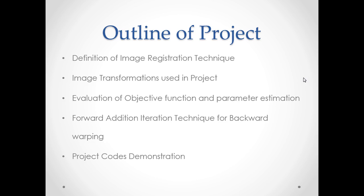The objective function is a function which depends on a parameter vector p. This parameter is important because we have a transformation from a reference image to a warped or transformed image, and this mapping depends solely upon this parameter vector p. The objective function is basically non-linear in p — it is the objective of our problem and we have to solve it. This is how we estimate the parameter vector p.